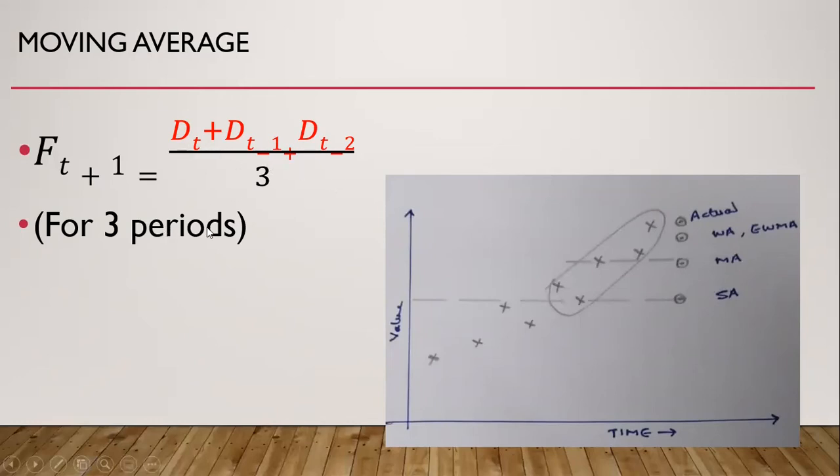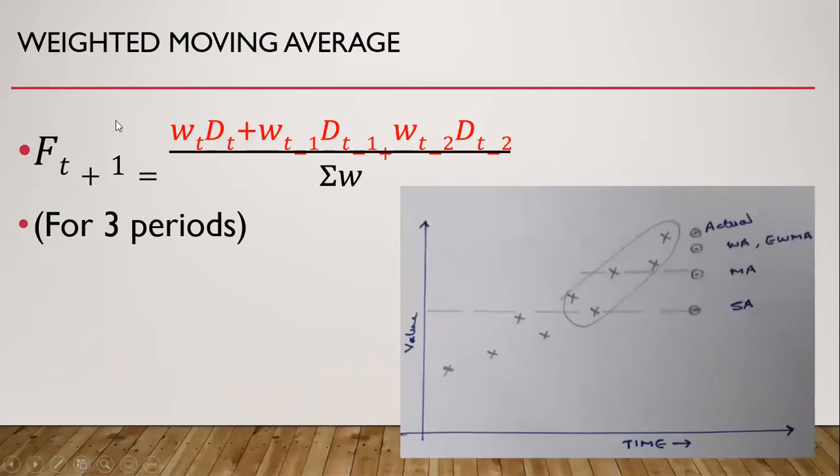We take either three period, four period, five period, or n periods in calculating the moving average. Then this is weighted moving average. Here the weights are multiplied with the previous demands, and the weights are not equal to each other. The most recent weight is more than the previous weight, and it is more than the weight before that. Denominator is summation of weights. This is for example for three periods. So the weighted average is slightly above moving average and slightly below the actual value in the future time.